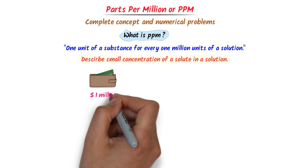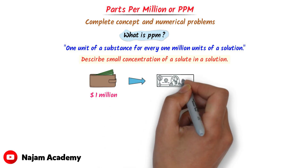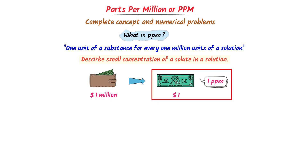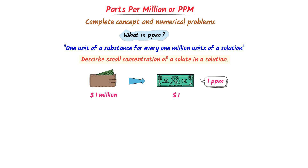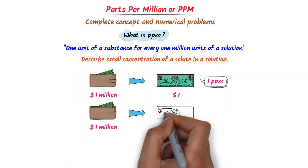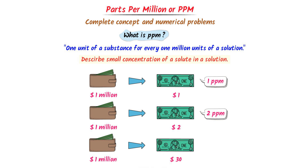For example, consider one million dollars in my pocket. Let I ask you to take as much money as you can — you take only one dollar from it. So your ppm is one ppm, meaning you have only one dollar out of one million dollars. If you take two dollars out of one million dollars, your ppm is two ppm. If you take thirty dollars out of one million dollars, your ppm is thirty ppm.